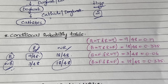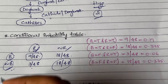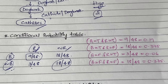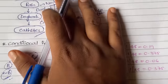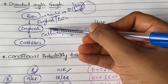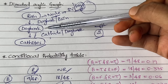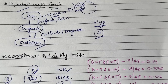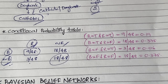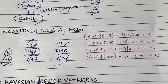You may wonder why we didn't include Cat Hides in the CPT here. When calculating probability, you always calculate it with respect to the parent node, not the child node. Rain is the parent of Dog Bark, and Dog Bark is the parent of Cat Hide — making Cat Hide a child node of Dog Bark. Since we're building the CPT for Dog Bark, we only use its parent, Rain.